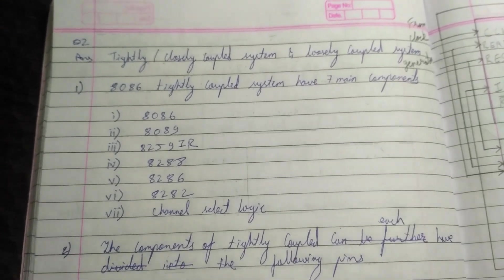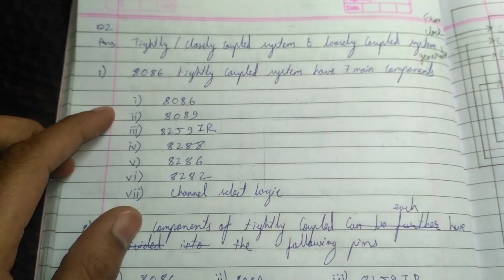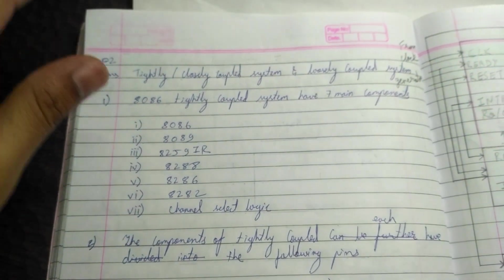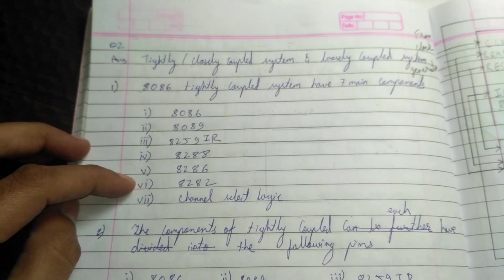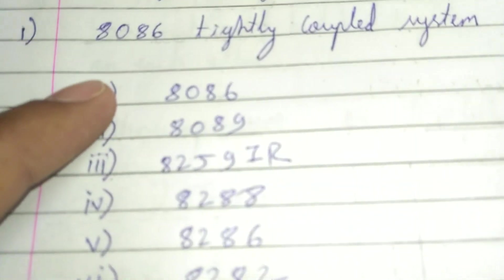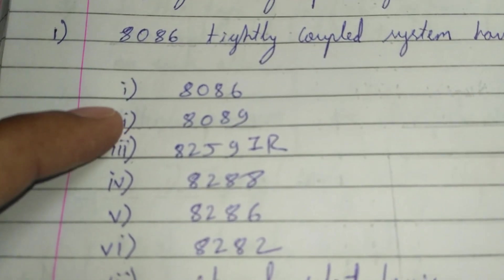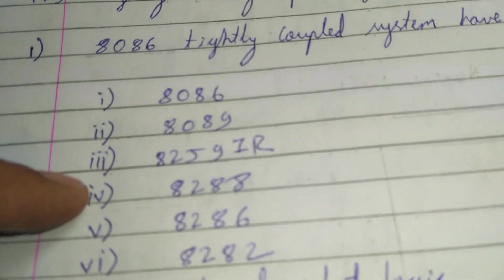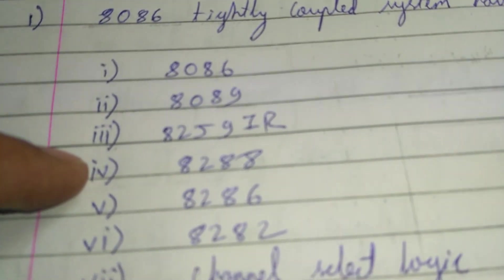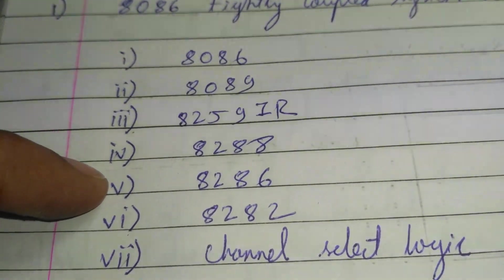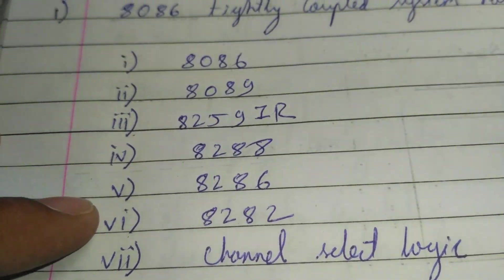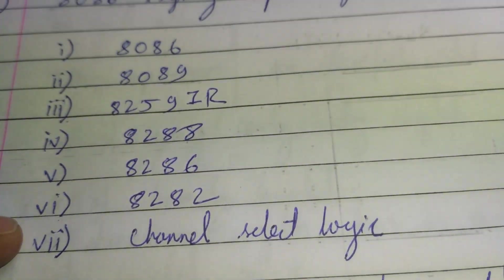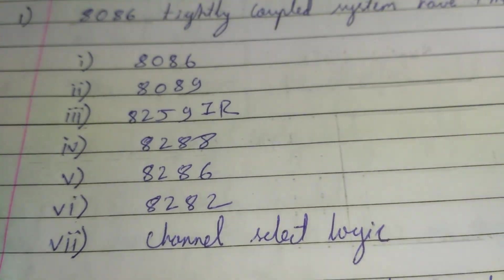I have divided the 8086 closely coupled configuration into seven parts. The first part is 8086, the second part is 8089, the third component is 8259 IR, the fourth component is 8288, the fifth component is 8286, the sixth component is 8282, and the seventh component is channel select logic.